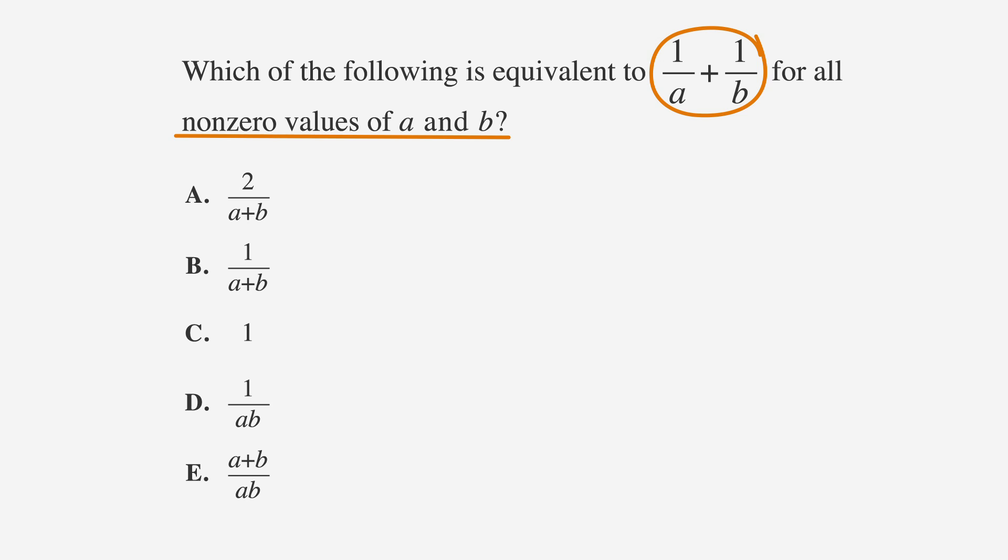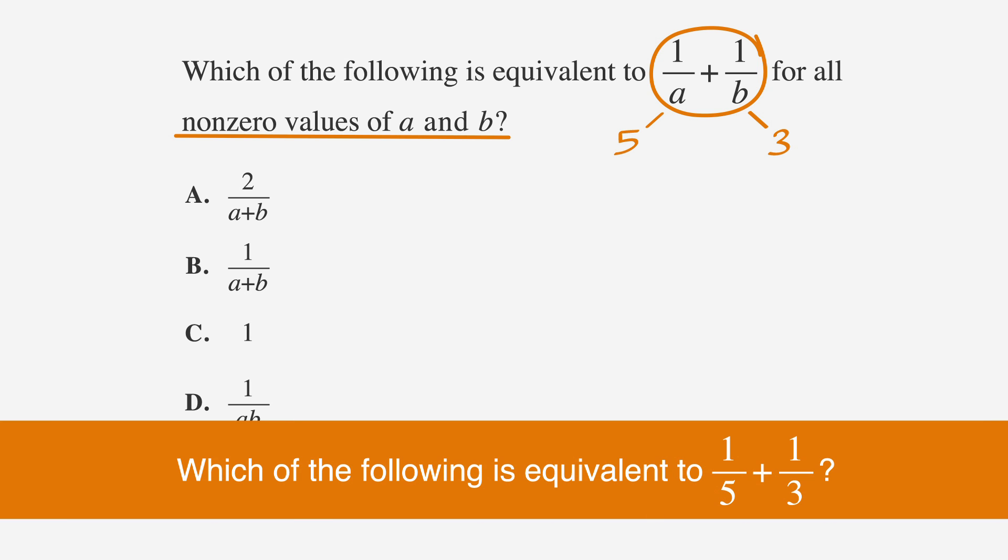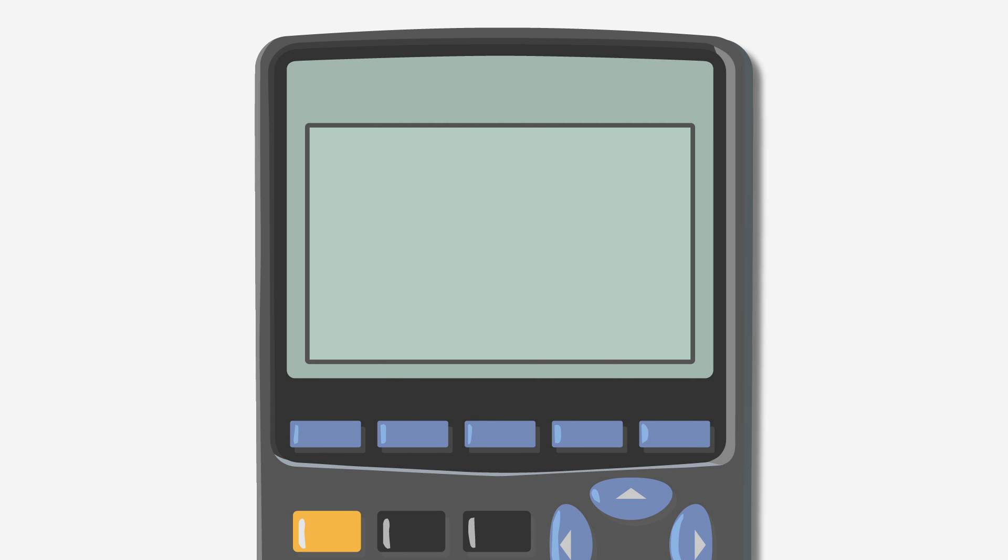Our first step is to pick numbers for A and B. Let's call A equals 5 and B equals 3. Step 2 is to plug our numbers into the problem as if the question had actually used them instead of the variables A and B. Which of the following is equivalent to 1 fifth plus 1 third? We can use our calculator to add 1 fifth plus 1 third to get 0.53 with 3 repeating. Using the calculator function that changes decimals into fractions, we get 8 over 15.